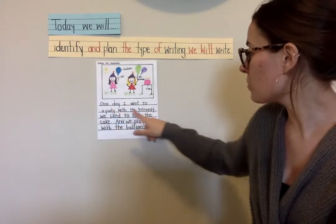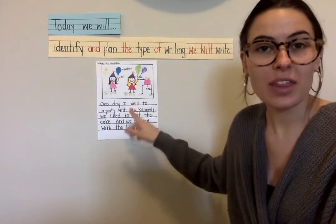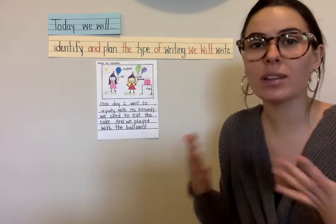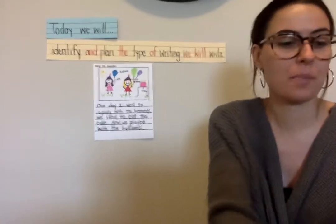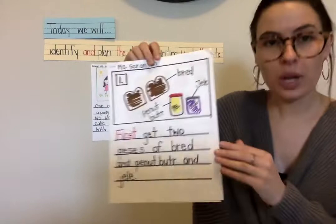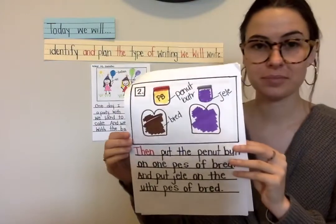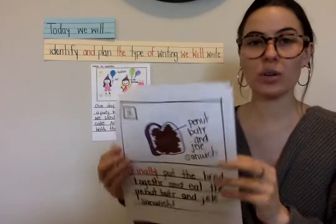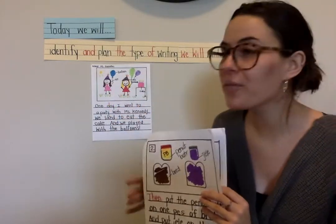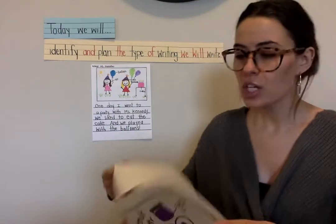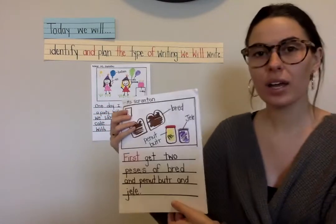One day I went to a party with Ms. Kennedy. We liked to eat the cake and we played with the balloons. If you remember, this is called a narrative or a true story, and we love and we're so good at writing true stories. Now let's see if you recognize the next piece of writing. What do we notice about this piece of writing compared to this piece of writing? Yes — this is a true story, it's a narrative, it tells us a story. But this work is a how-to.